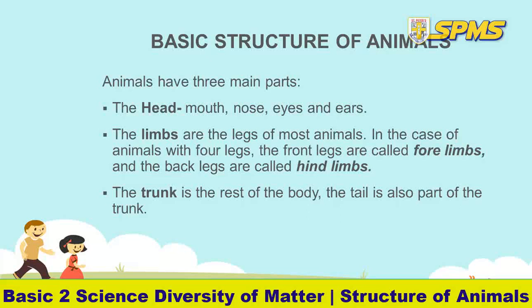Now let's look at the limbs. The limbs are the legs for most animals. In the case of animals with four legs, the front legs are called the fore limbs, and the back legs are called the hind limbs. The limbs are used for movement such as walking, running, jumping, or even swimming. The trunk is the rest of the body of the animal.